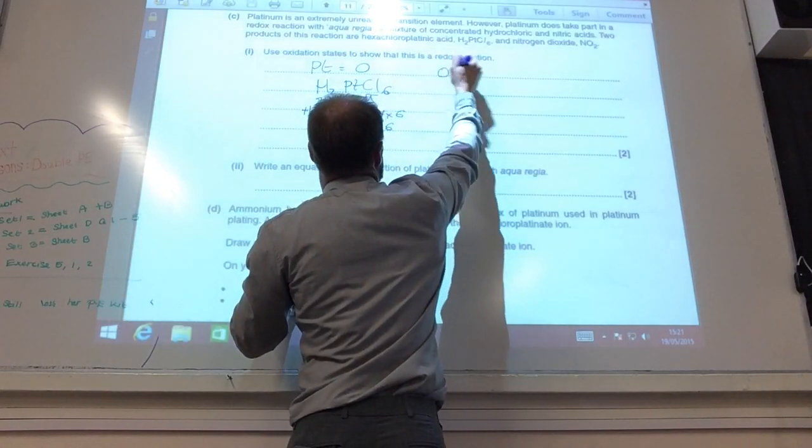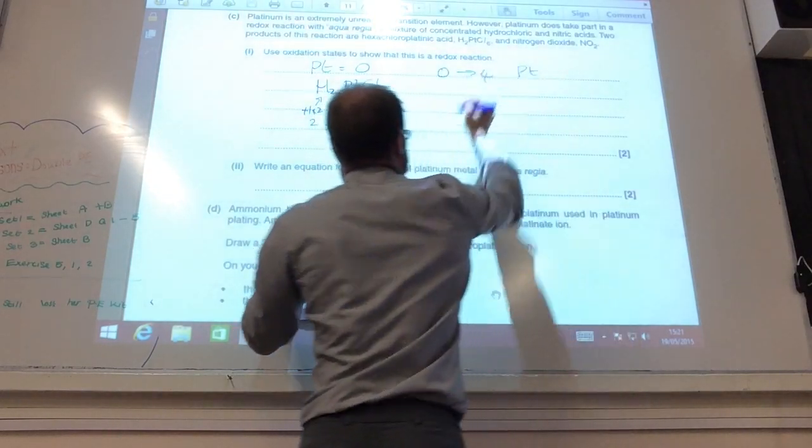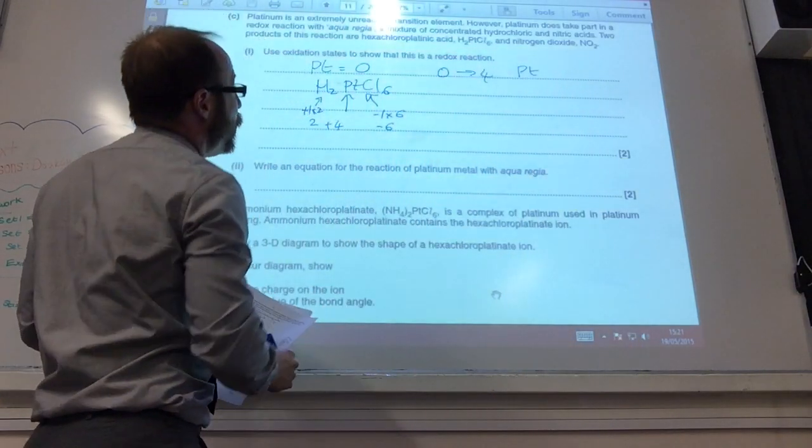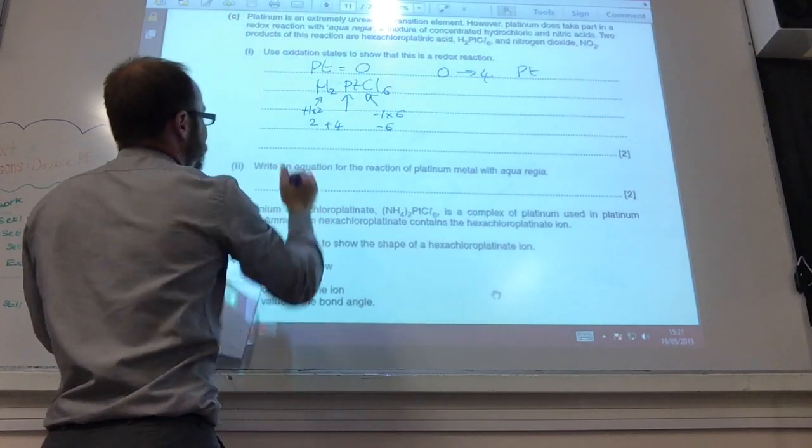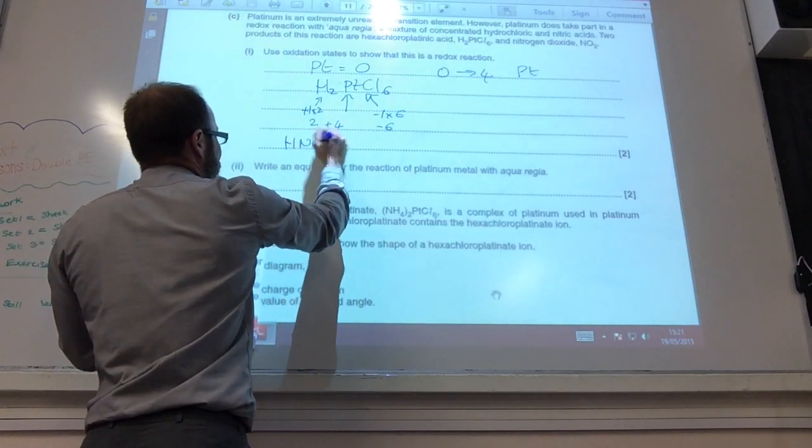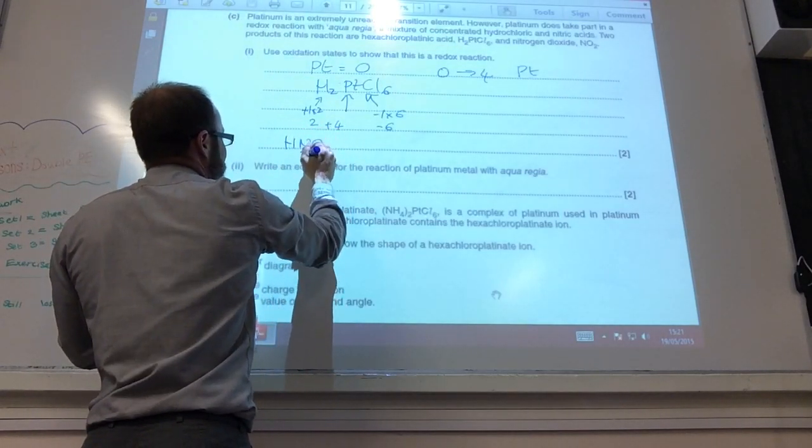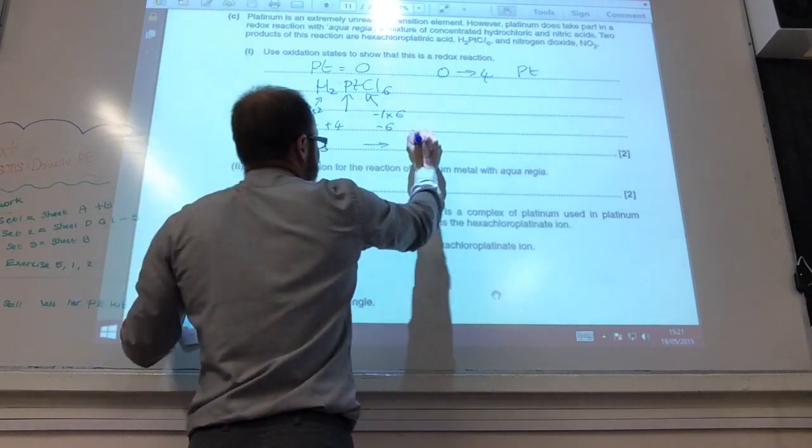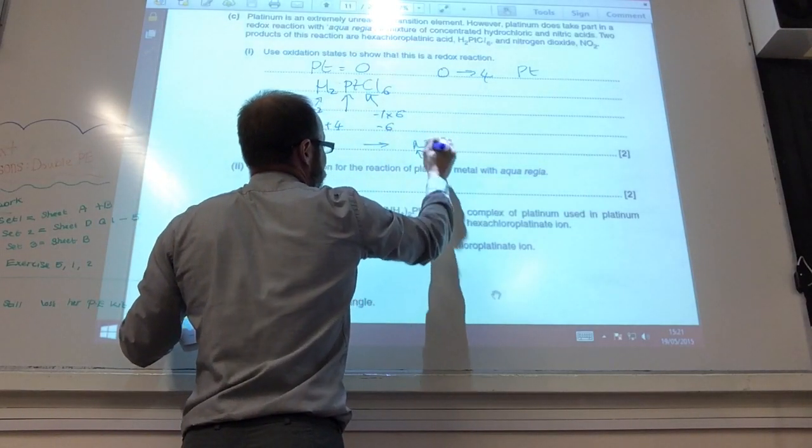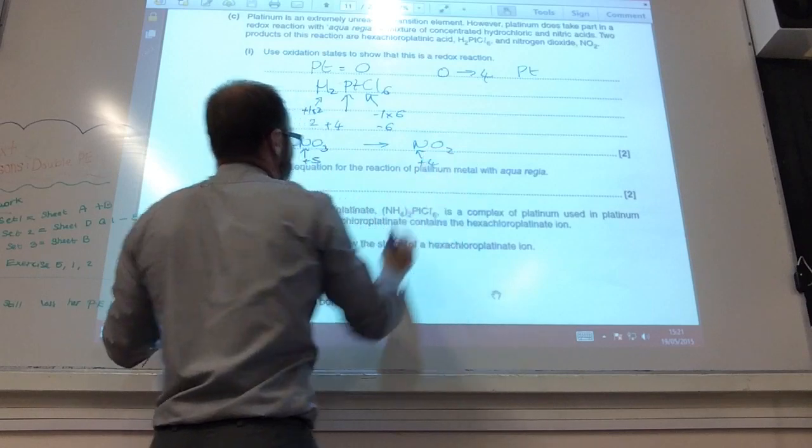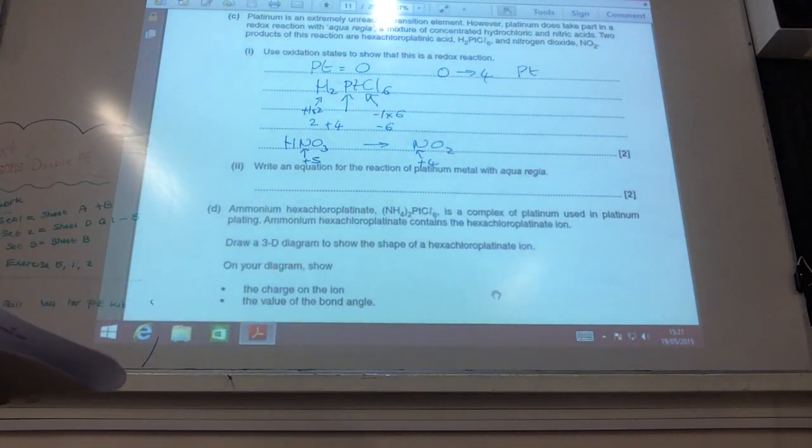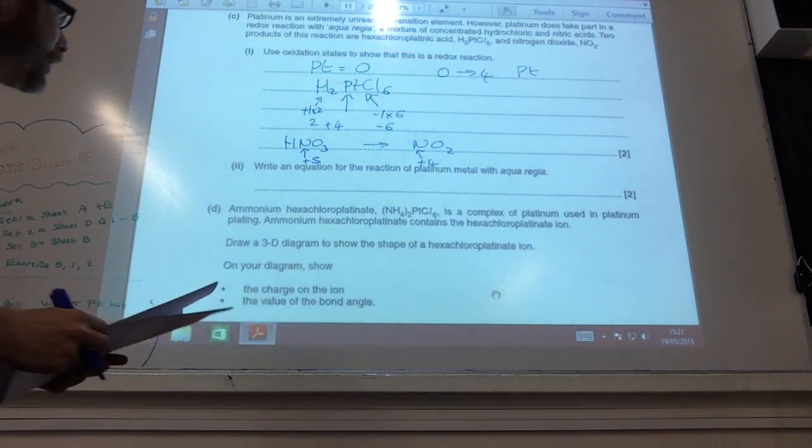So platinum has gone from 0 to +4. What about for nitrogen in nitric acid, HNO3? Nitrogen there we know is +5, and that's gone to nitrogen dioxide, which is +4. So I think we can safely assume that is a redox reaction.